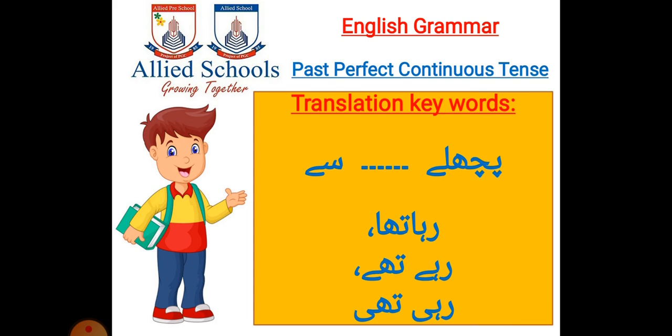In Urdu translation, the keywords are 'pichle dash se.' In the last of the sentence, you will get 'raha tha,' 'rahe thi,' or 'rahi thi.' For example: pichle do ghante se wo parh raha tha.